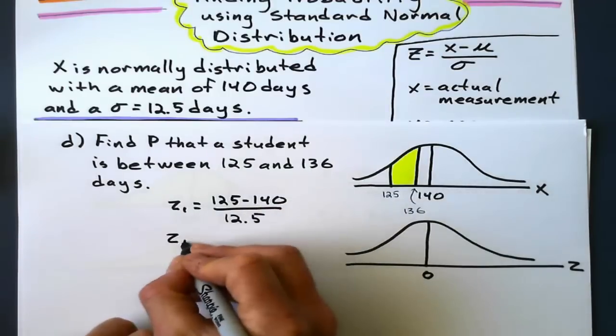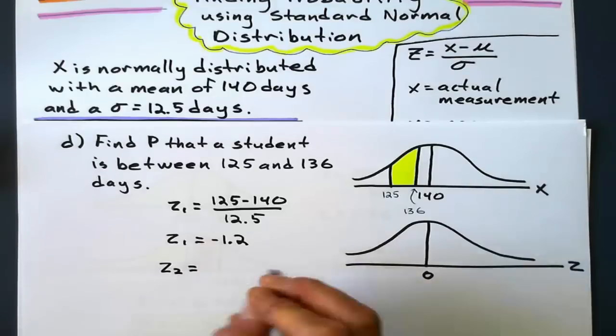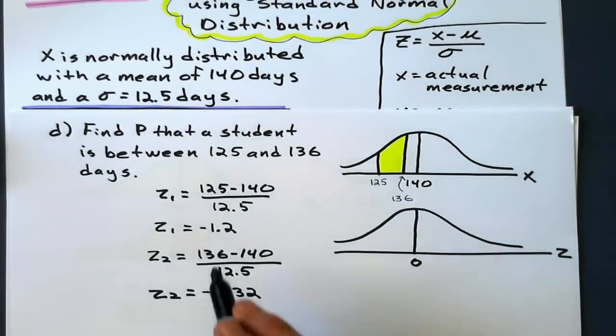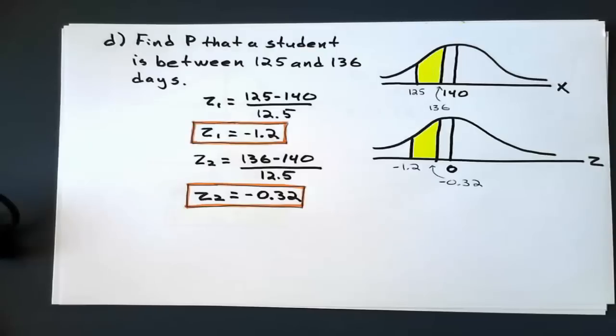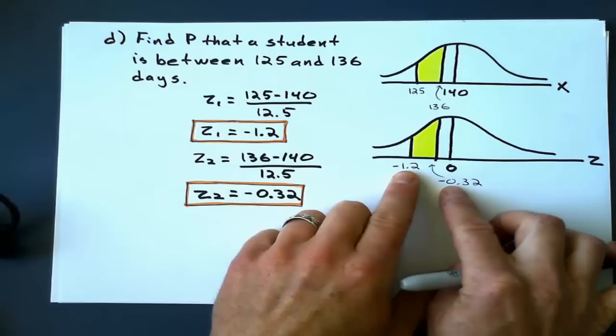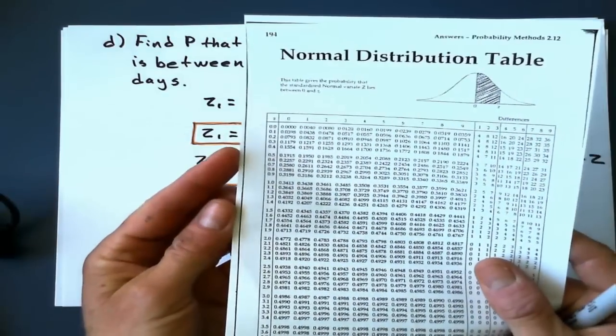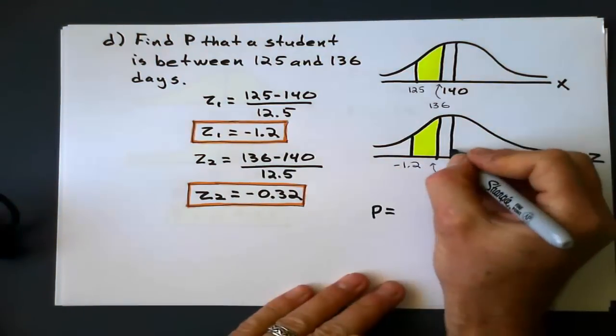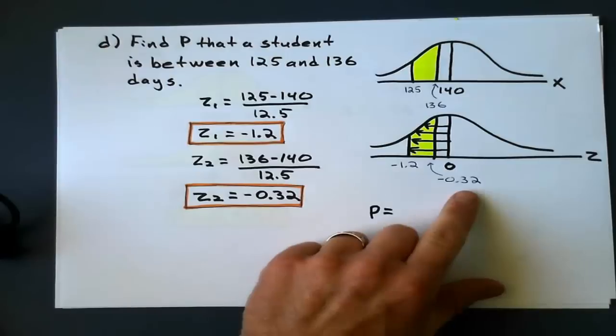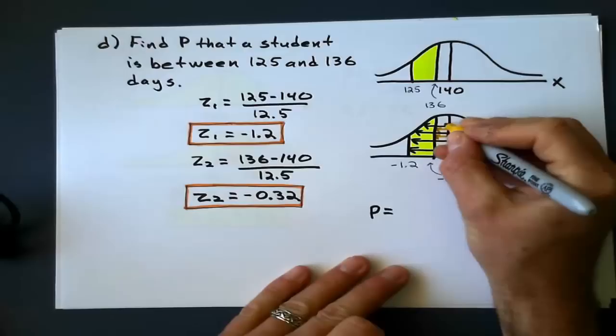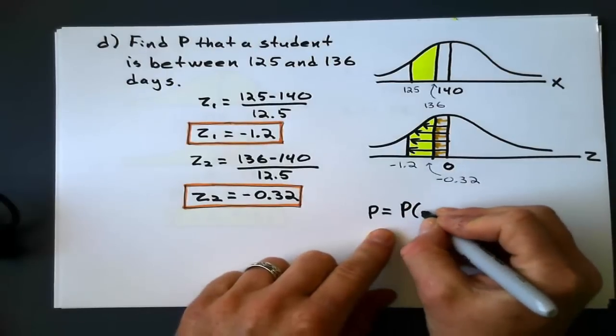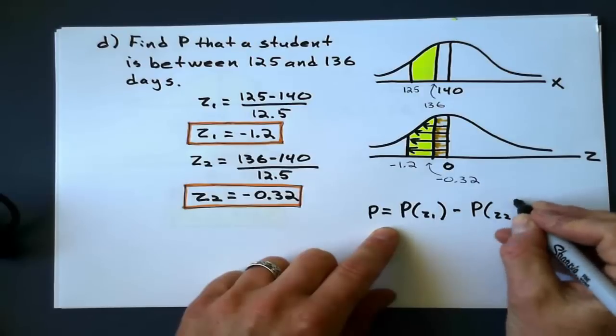125 minus 140. I do my thing, and I get a value. I'll get a negative Z value, negative 1.2. And for 136, I will get another negative value, because it's below the mean, negative 0.32. So I redraw that with my Z values. Shade it appropriately. Now, this part, when I look, negative 1.2 is the same as positive 1.2. So I look up 1.2 on there, attached to the mean. So the probability is going to equal the probability of what I get for 1.2, that part, attached to the mean. Subtract the probability of Z2, which is that part right there. They only give you the probabilities attached to the mean.